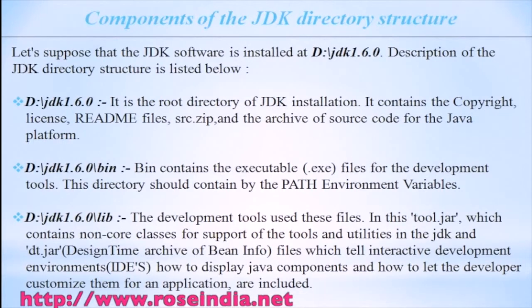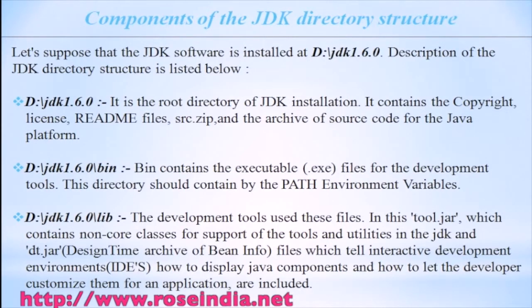Components of the JDK directory structure. Let's assume that the JDK is installed on D drive on your computer. D:\JDK 1.6.0 is the root directory of JDK installation. It contains a copyright, license, readme file, source file, and archive of source code for the Java platform.